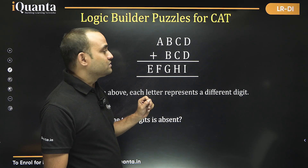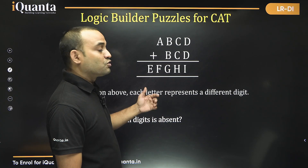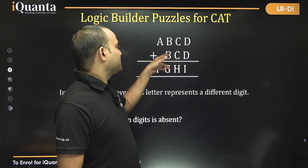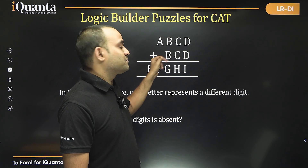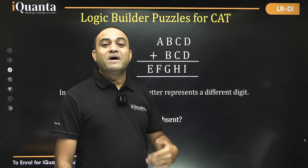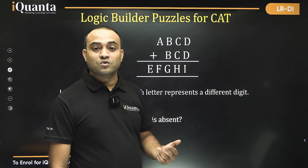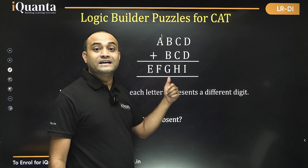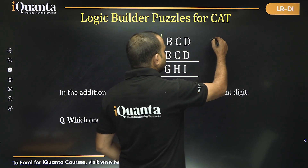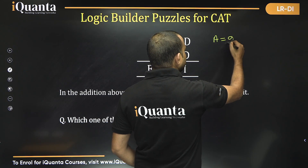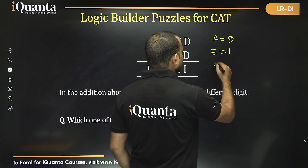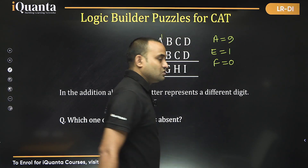Now what could the carry-forward be? Is it 1? Is it 2? Is it more than that? Think about this. B is also a single-digit number, and even if we take B equal to 9+9, or 8+8, or 7+7, the maximum carry-forward will be equal to 1. Adding 1 should result in a two-digit number, so A must be 9, and 9+1 becomes 10. That means E must be equal to 1 and F must be equal to 0.